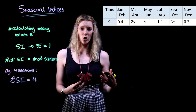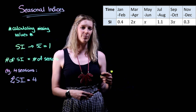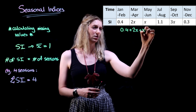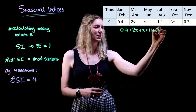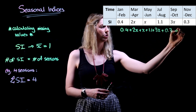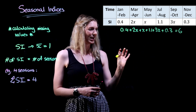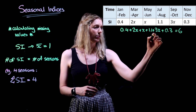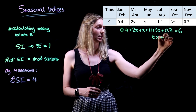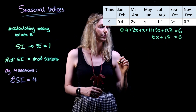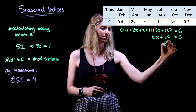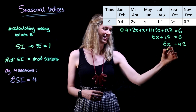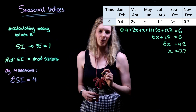We're going to start off by setting up our equation with the knowledge that if we take each of these seasonal indices — both known and unknown — and add them together, they will equal a total of six. We can now simplify and solve this equation. Cleaning up the left-hand side gives us 6x plus 1.8 equals 6. We subtract 1.8 from both sides to get 4.2, and dividing both sides by 6 gives us an x value of 0.7.